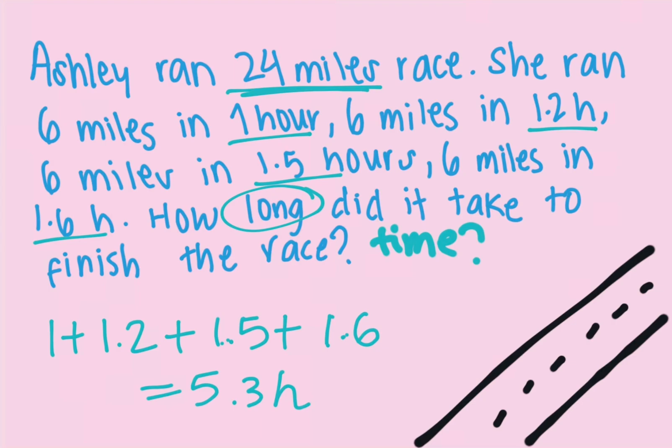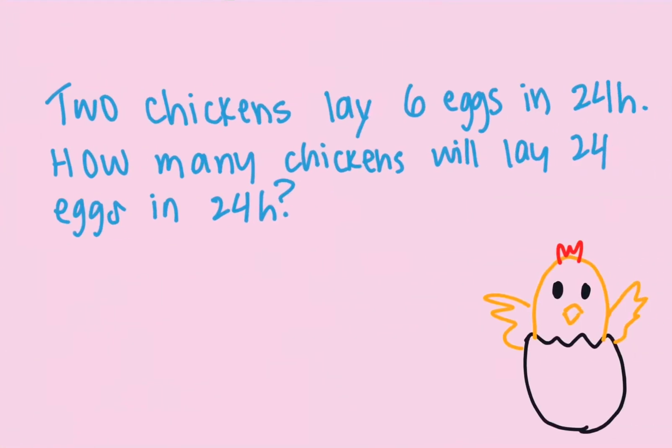If you don't see it that way, you can also see it as 5 and a fraction, because 1 divided by 2 is 0.333 and so on — it's the same thing. So 5.3 hours or 5 and a half hours is how long it took Ashley to finish the race. The next question is about chickens.